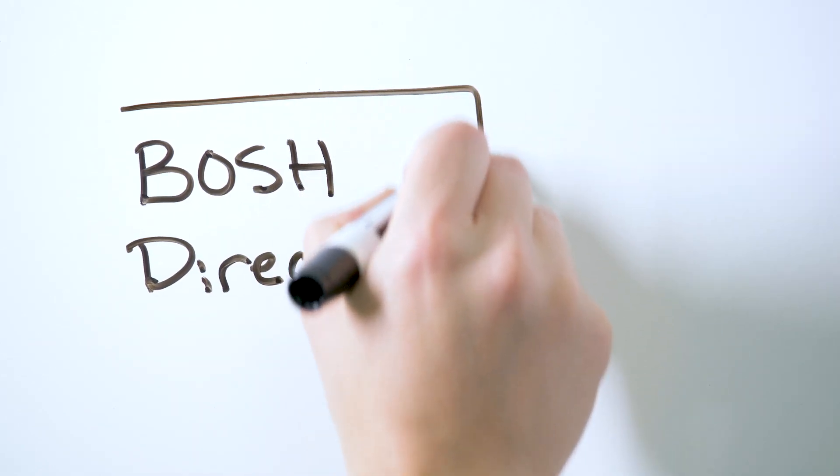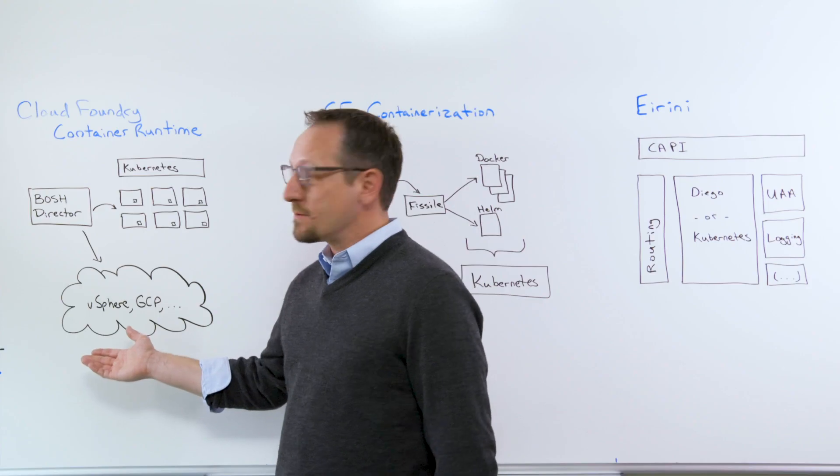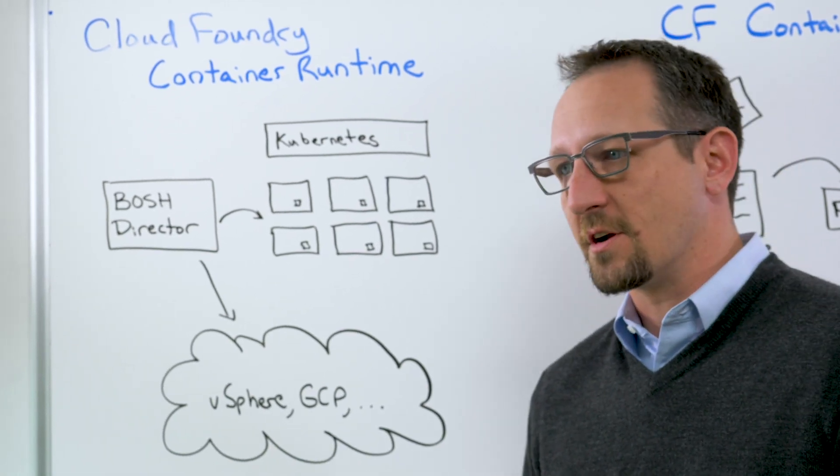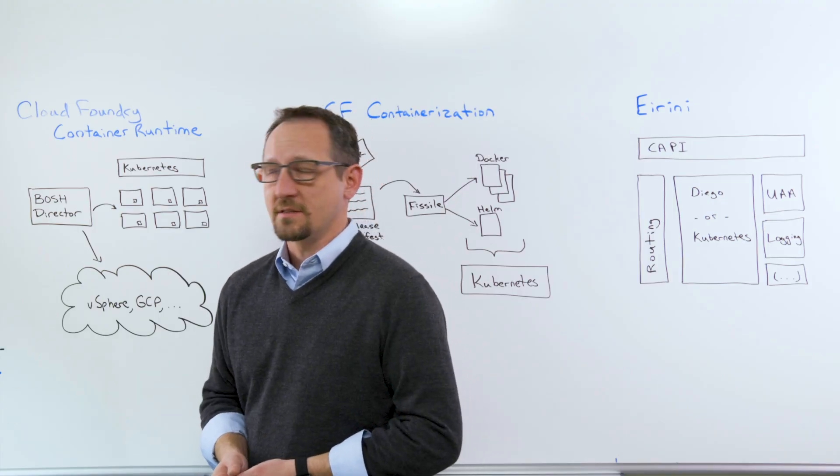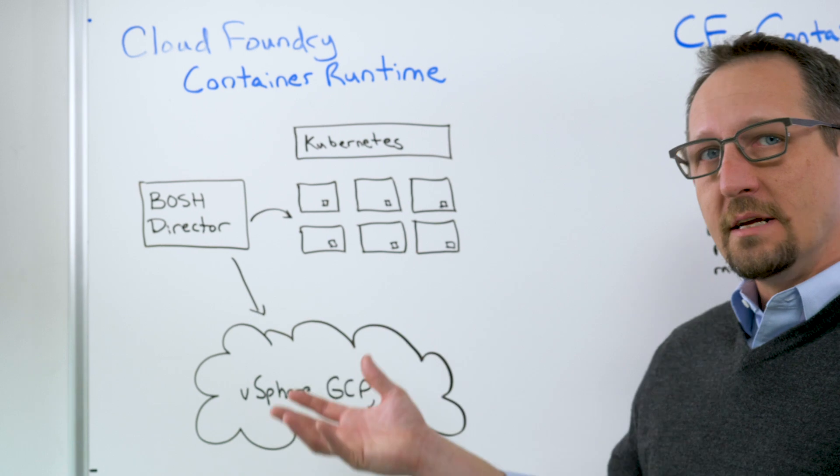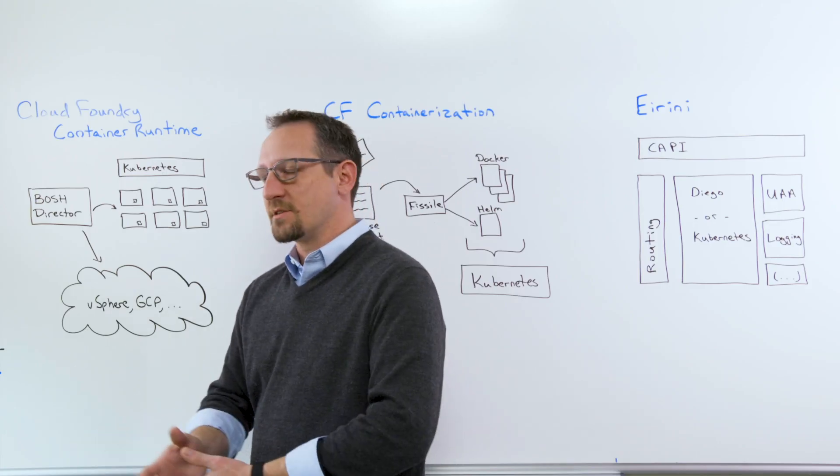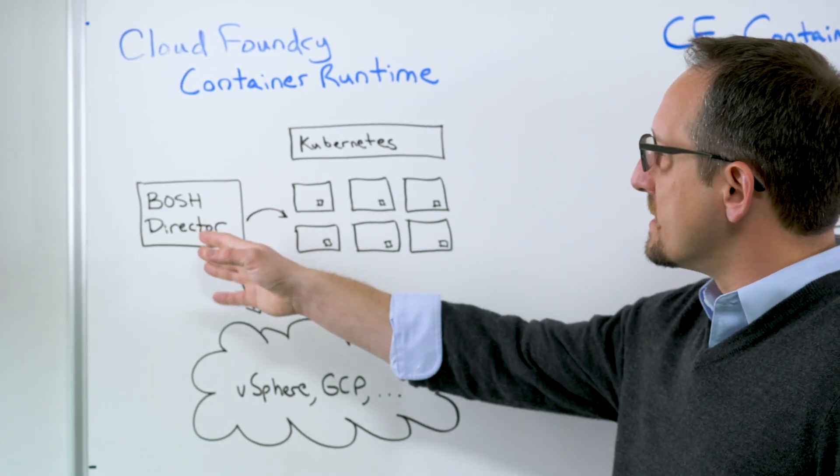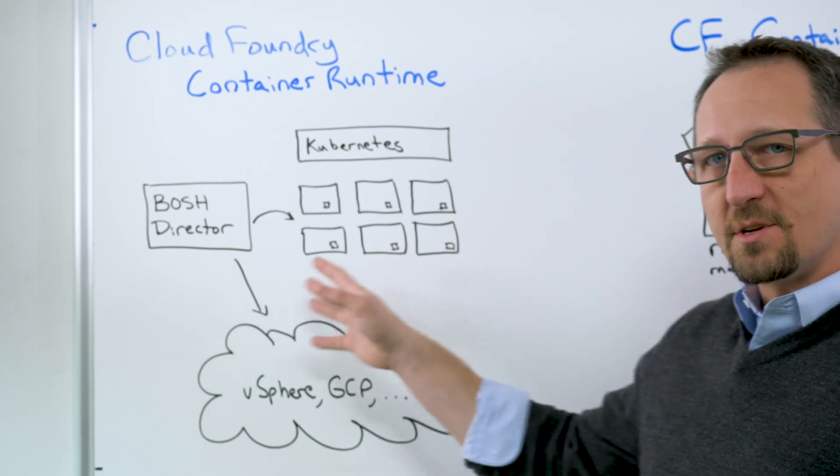It does that by using Cloud Foundry BOSH in order to deploy onto virtually any infrastructure. BOSH has the ability to communicate with public clouds, private infrastructure environments, virtualization platforms, open source infrastructure as a service systems, and it can ask for whatever it needs in terms of virtual machines, the storage necessary to support them, the networking configuration. And so the BOSH director is able to ask this infrastructure or these clouds for as many virtual machines as it needs.